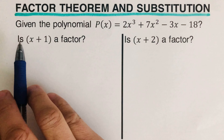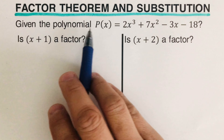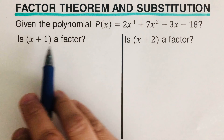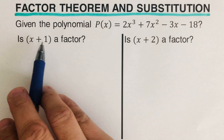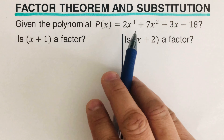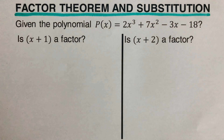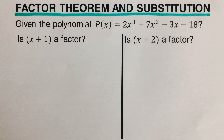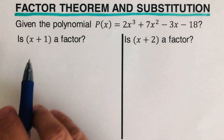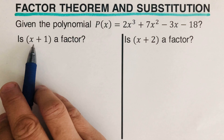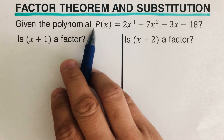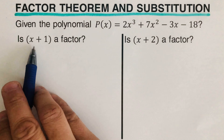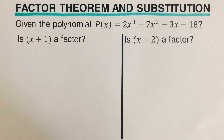Let's take this first example. We're given a polynomial p of x, and we're going to determine: is x plus one a factor of this polynomial or not? We're going to use substitution for this. What we need to do is determine what x value we're going to use, since this is p of x, we use the zero product property.